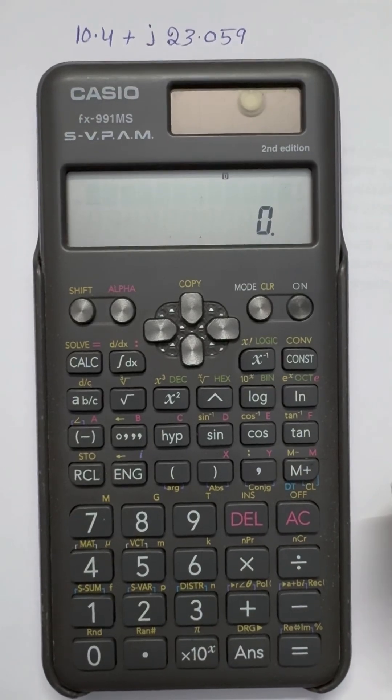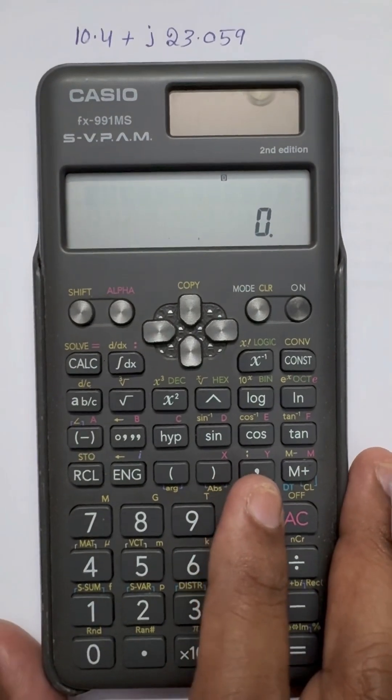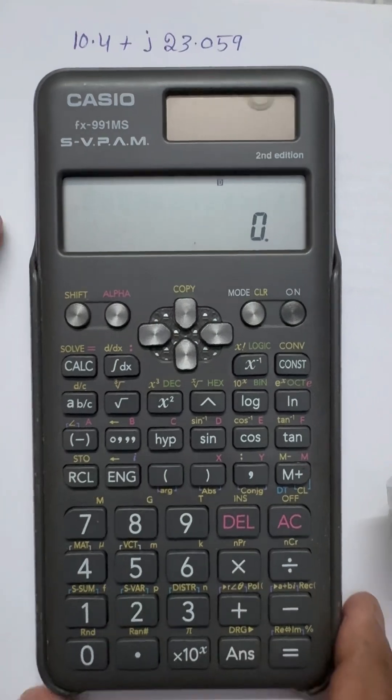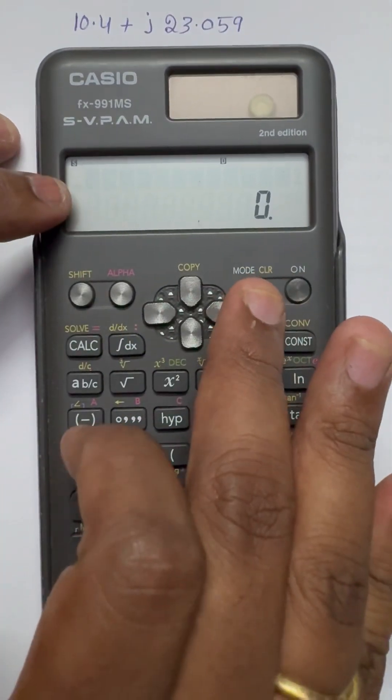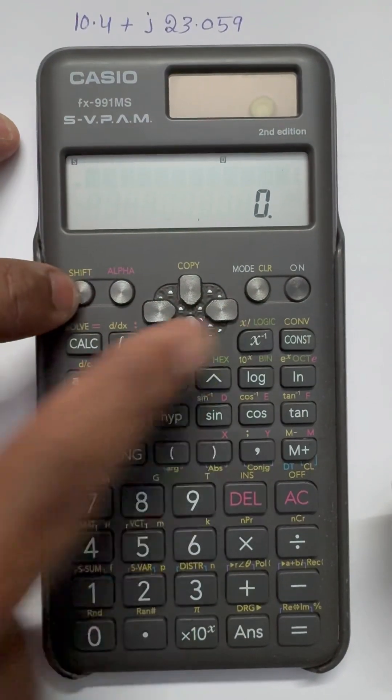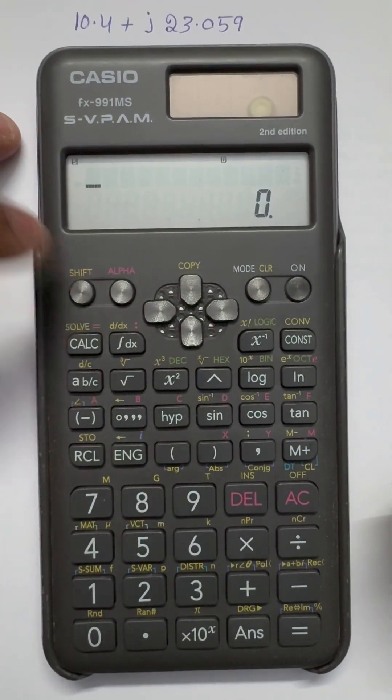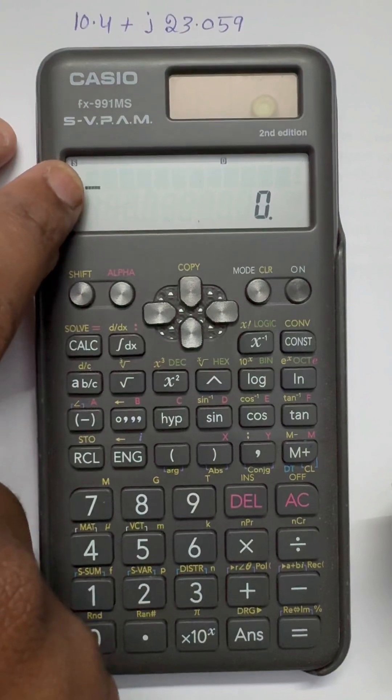Five nine, that is the value. First we have to set our calculator in complex mode. Initially we have to clear. Press the shift button, and we will see here, yes.